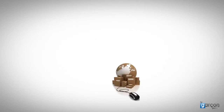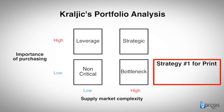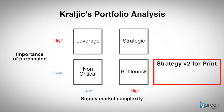This is why procurement cards and online e-procurement systems are so popular. This strategy works well whoever has the balance of power, but might be the only option if the supplier enjoys the balance of power. So strategy number one is: simplify and improve efficiency. Strategy number two is to change the positioning of the category by moving it to another quadrant — leverage.